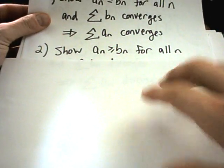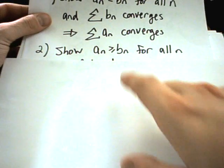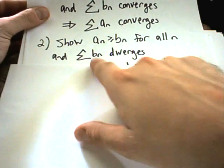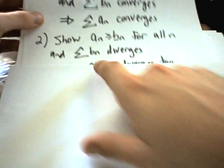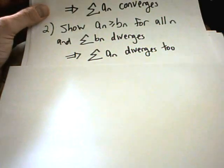Likewise, on the opposite end, if you can show that a_n is bigger than b_n for all n, and the b_n series diverges, then the original series diverges too.